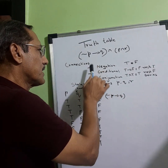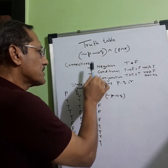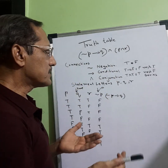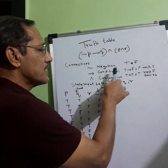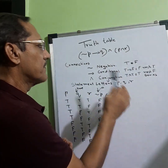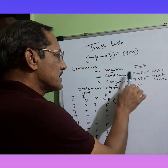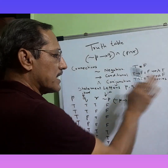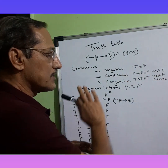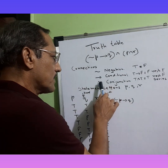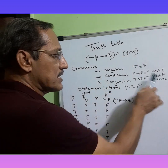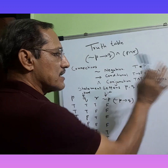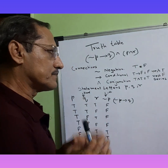The connectives we have are: negation, conditional, and conjunction. The rules: for negation, if it is T it goes to F. For conditional, if it is T conditional F then that is F; rest are all T. For conjunction, it is like a series circuit — only T and T gives T, rest are F.